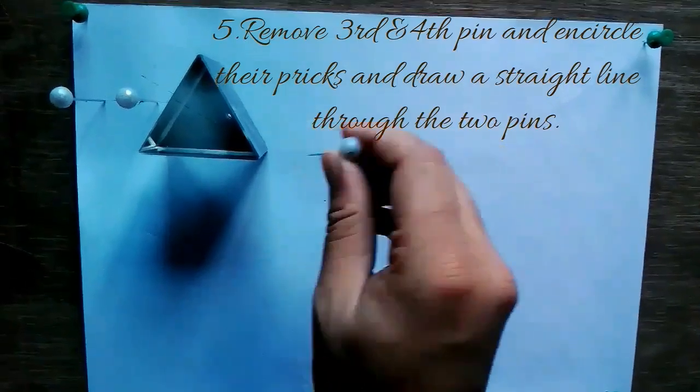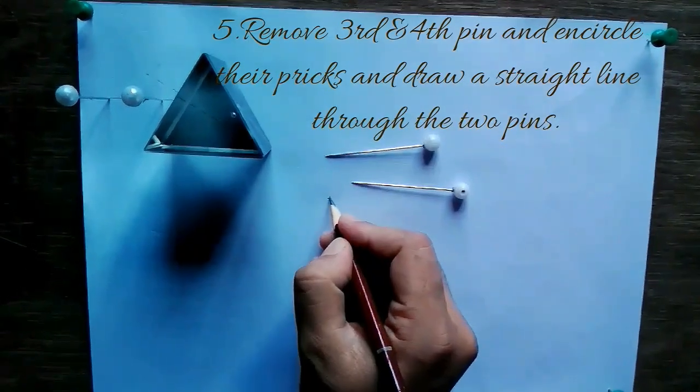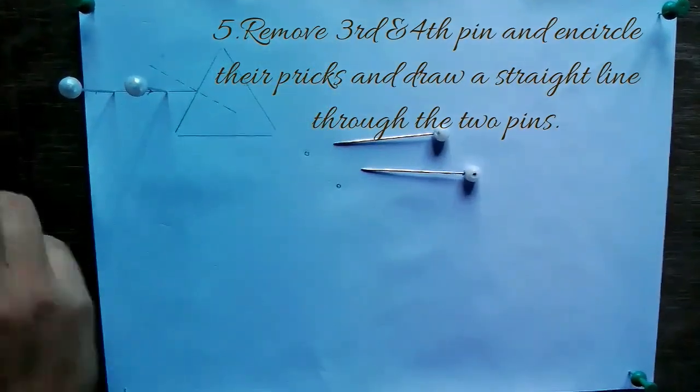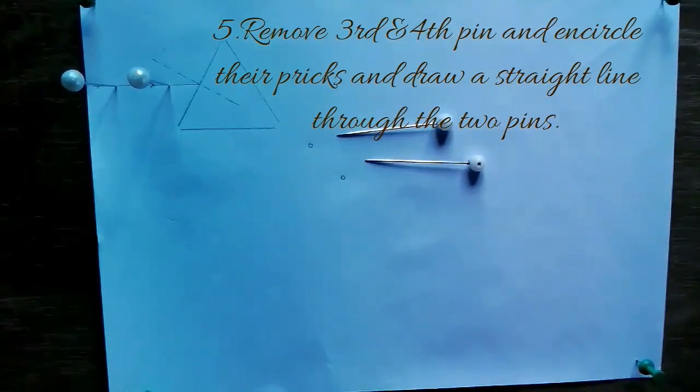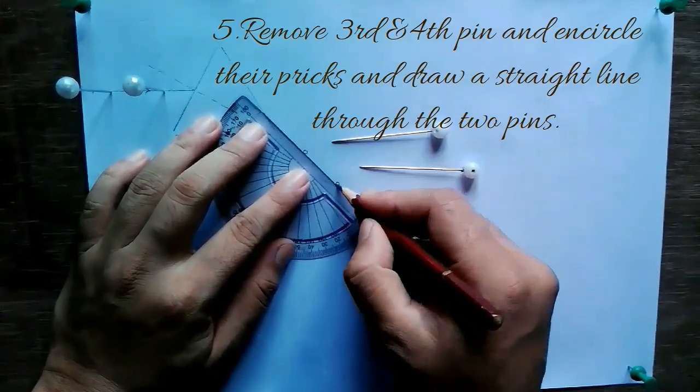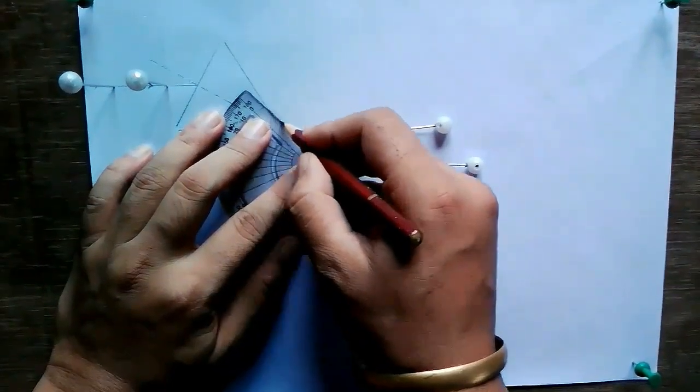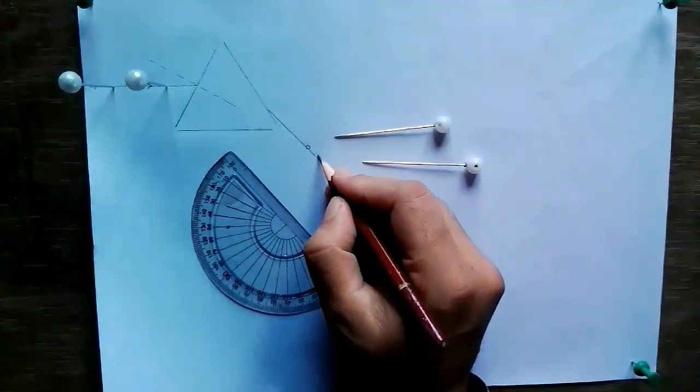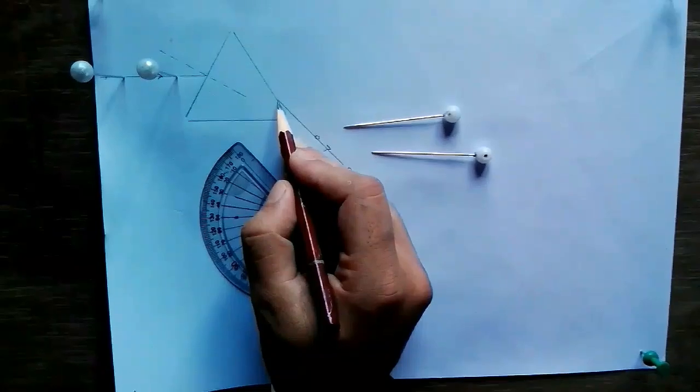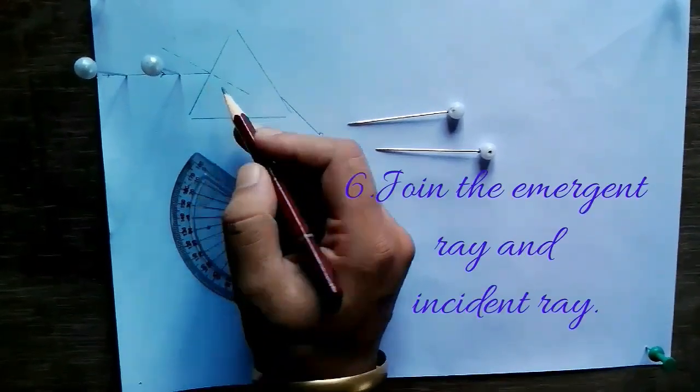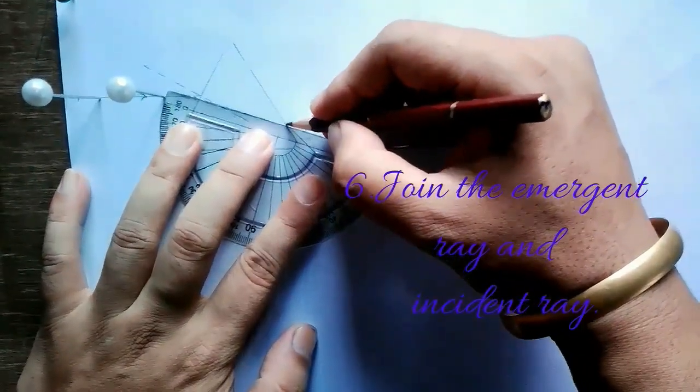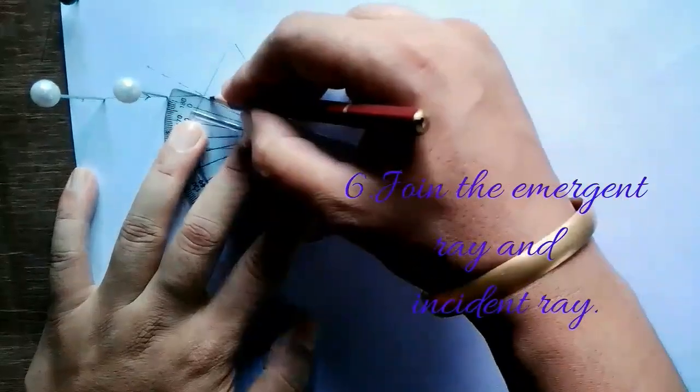Now draw a straight line through the two points which we will get from the impression of these two needles, and it will give us the emergent ray.